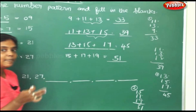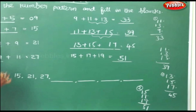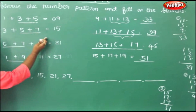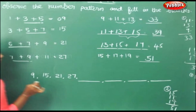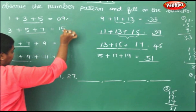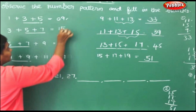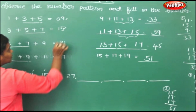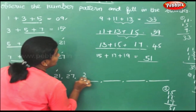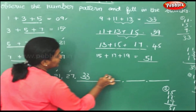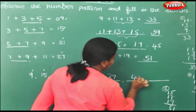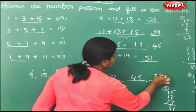So did you understand the pattern? They have taken the last two numbers plus the next odd number each time. The resulting sums are: 9, 15, 21, 27, 33, 39, 45 and 51.